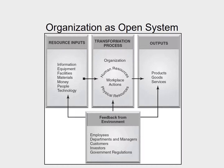As a reminder about open organizations and open systems: we have resources and inputs — information, equipment, facilities, materials, money, people, technology. We have outputs — products, goods, and services. We have feedback from the environment, which can come from employees, customers, investors, government regulations, departments, and managers — all sources of information about what is happening outside the organization. Organizational development is mainly focused on the transformational process, or the throughputs: human resources, physical resources, and workplace actions.